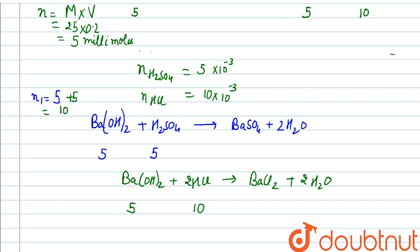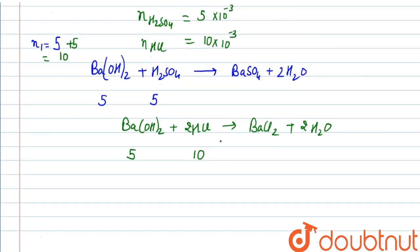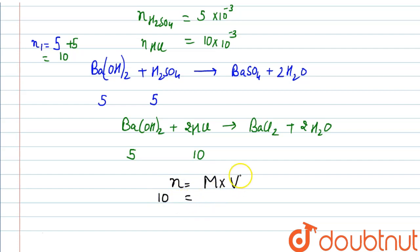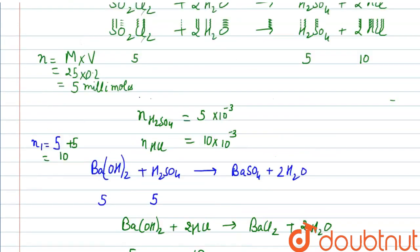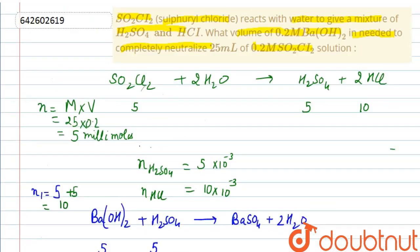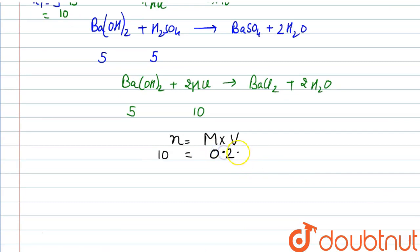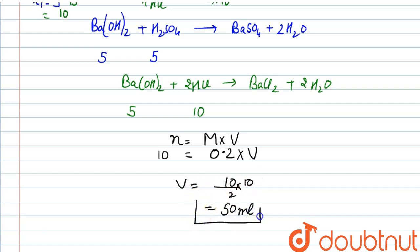Total millimoles of Ba(OH)₂ required = 5 + 5 = 10 millimoles. Using moles = molarity × volume: 10 millimoles = 0.2 M × volume, so volume = 10 / 0.2 = 50 mL. Therefore, 50 mL of barium hydroxide solution is required to neutralize the SO₂Cl₂ solution.